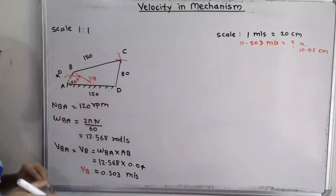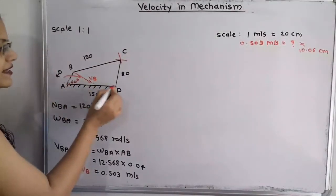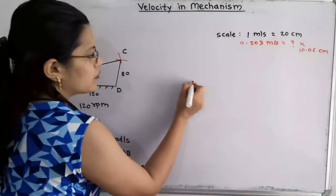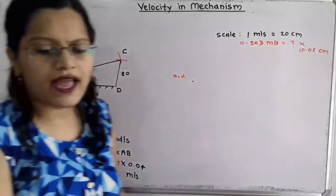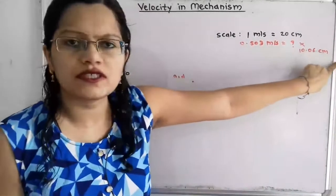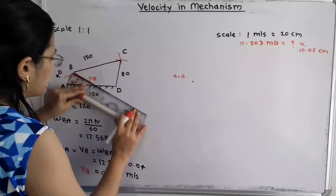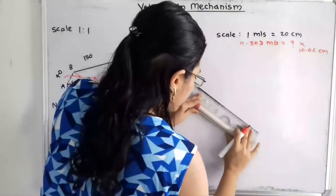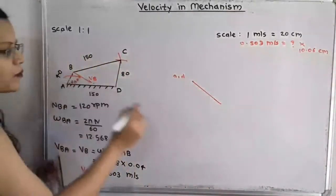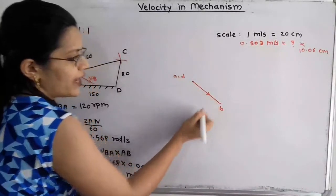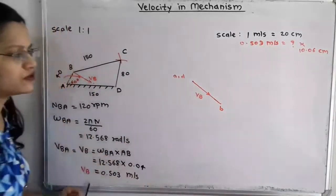Now in the same direction I have to draw the velocity vector. Both points A and D are fixed points, so I will select one point and for the velocity diagram show it with small letters a and d. I take the scale equal to 10.06 cm in the same direction. The initial point is A and the final point is B, so the vector ab indicates the velocity of B with respect to A — simply VB.